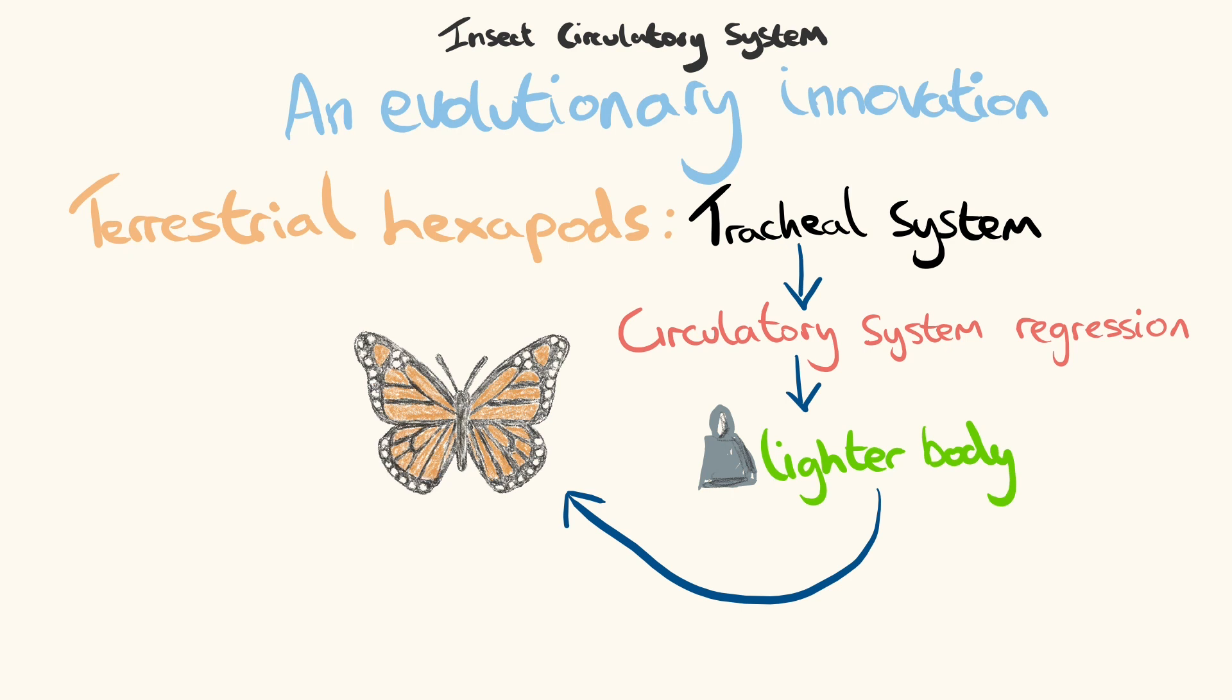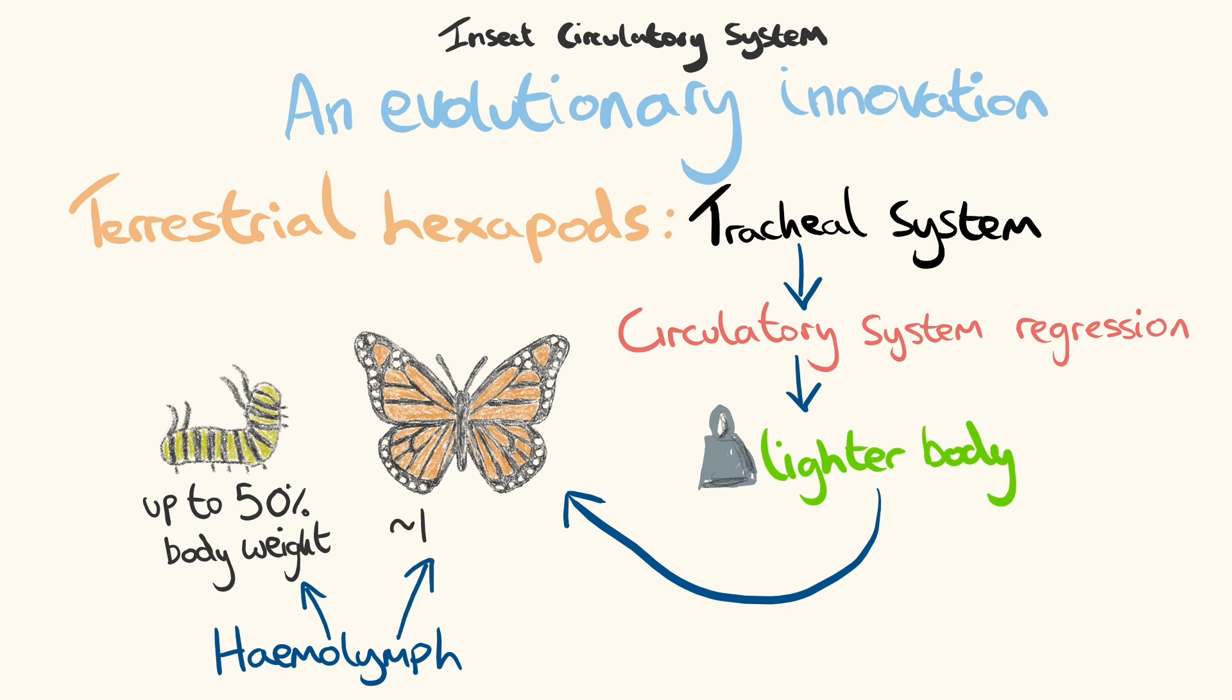This evolutionary change is also reflected in life history. For example, the haemolymph volume can account for up to 50% of the body weight of a caterpillar, but only 15% of the body weight of a butterfly.